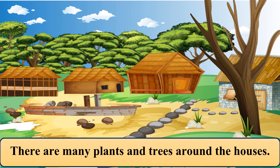There are many plants and trees around the houses. You can see in the picture — in villages there are so many trees and plants. Each house is separate from the other, so there are places for trees and plants. Look at this sentence in your book, listen carefully, and say with me: There are many plants and trees around the houses.